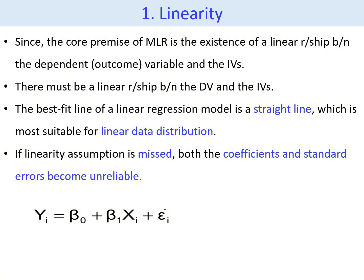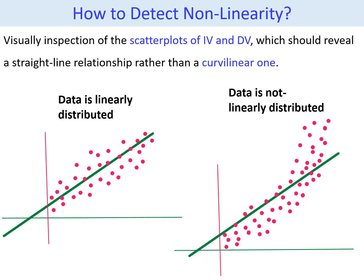Standard errors describe the variability across multiple samples of a population. As you see from the linear equation, Y is the dependent variable, Beta 0 is the y-intercept, Beta 1 is the coefficient, and E is the error term. To detect the presence of a linear relationship between the dependent and independent variables, we can visually inspect the scatter plots. In the first case shown in the figure, there is a linear relationship, because most of the observed data are close to the straight line.